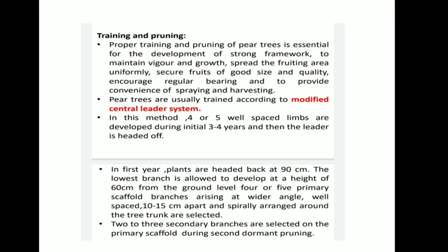Now Training and Pruning. Proper training and pruning of pear trees is essential for the development of a strong framework, to maintain vigor and growth, separate the fruiting area uniformly, secure fruits of good size and quality, encourage regular bearing, and to provide convenience of spraying and harvesting. Pear trees are usually trained according to the modified central leader system. In this method, four or five well-spaced limbs are developed during initial three to four years and then the leader is headed off. In the first year, plants are headed back at 90 cm. The lowest branch is allowed to develop at a height of 60 cm from the ground level. Four or five primary scaffold branches arising at wider angles, well-spaced 10 to 15 cm apart and spirally arranged around the tree trunk, are selected. Two to three secondary branches are selected on the primary scaffold during second dormant pruning.